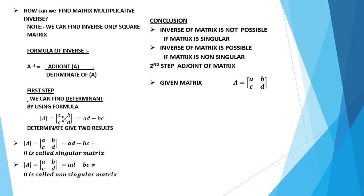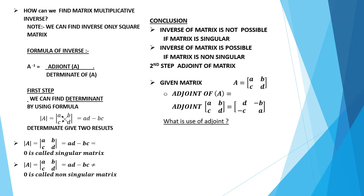Given matrix A is equal to [A, B; C, D]. The adjoint of A: from the elements A, B, C, D, the adjoint equals [D, -B; -C, A]. Here we change the first and fourth entries of the matrix and change the sign of the second and third entries.